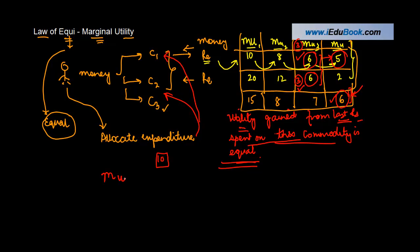Or in other words, we say that marginal utility of C1 upon price of C1 is equal to the marginal utility of C2 divided by price of C2 is equal to marginal utility of C3, subject to of course the total budget that a consumer has.